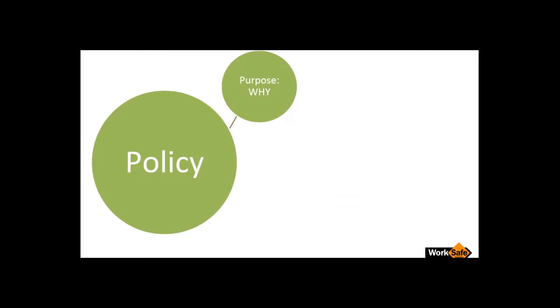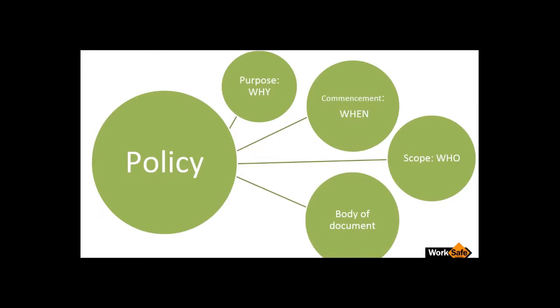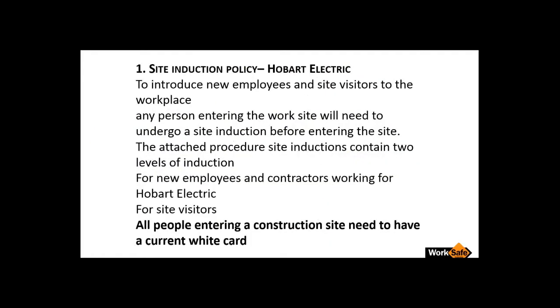We need to use plain English and make it very clear what people can do. Going back to the policy and what it might contain: first, we need to figure out the purpose — why do we need that policy? The next step is a commencement date, when you're actually going to implement this policy in your workplace. Then the scope — who it actually applies to. Then the body of the document — what the policy is all about. And you might also have an acknowledgement. Not all policies need one, but some — like bullying and harassment, or drug and alcohol policies — generally need an acknowledgement to confirm that whoever has read the document has understood its content.